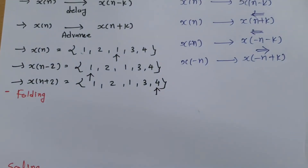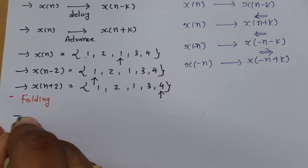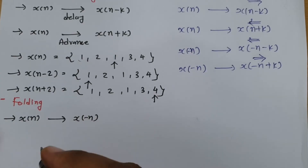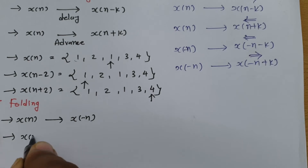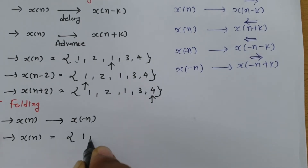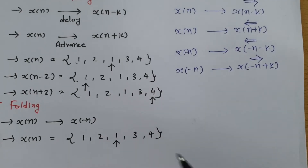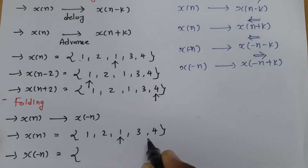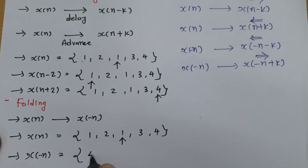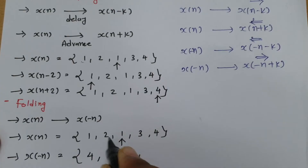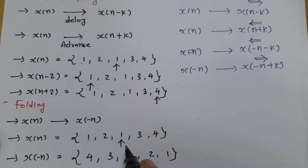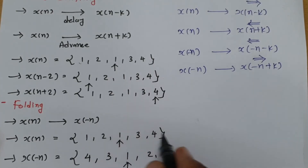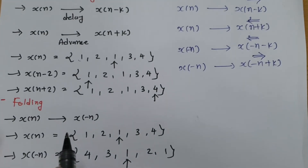Now let us cover time folding. For time folding, when you have signal x of n, folding gives you x of minus n. For example, if x of n is {1, 2, 1, 3, 4} with a reference here, performing the folding operation gives the reverse order: {4, 3, 1, 2, 1} with the same reference position. So folding means reversal of the sequence with respect to time.